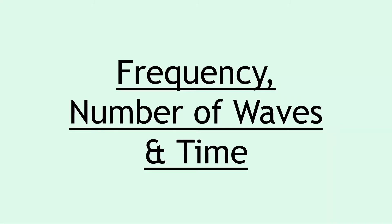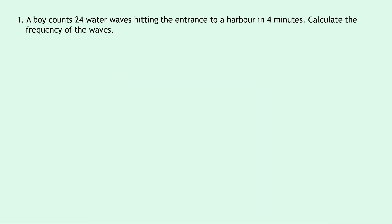Firstly we're going to look at three worked examples covering the relationship between frequency, number of waves and time. Question 1 says that a boy counts 24 water waves hitting the entrance to a harbour in 4 minutes. Calculate the frequency of the waves.